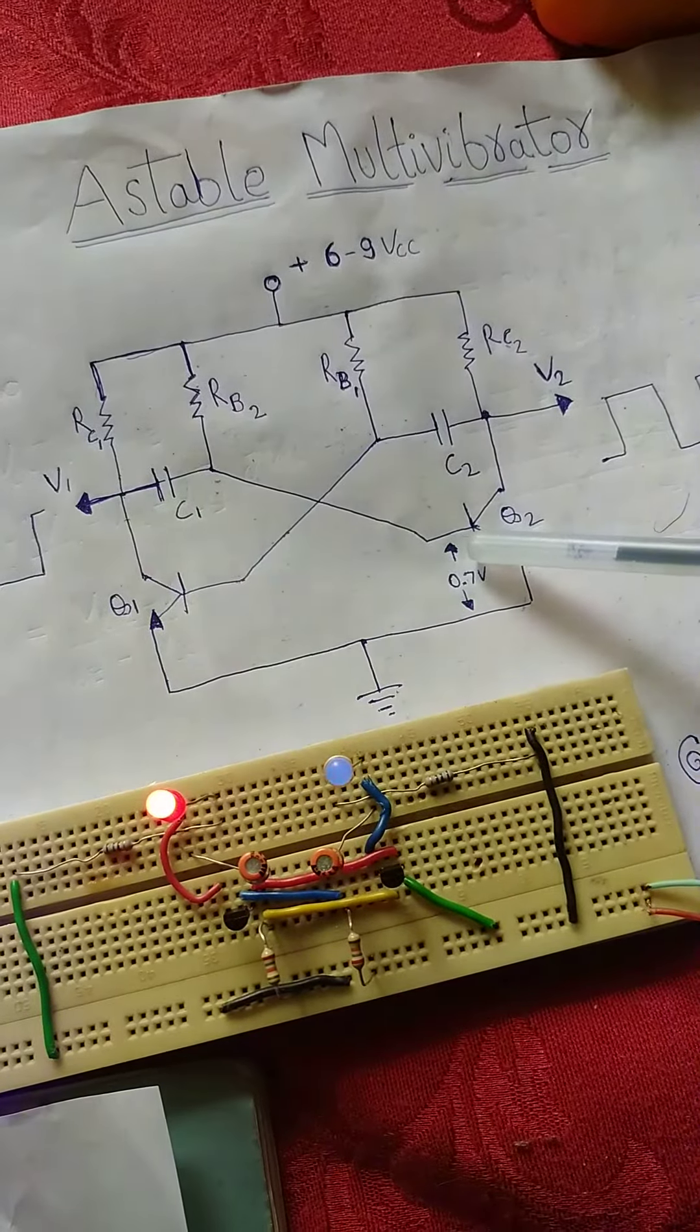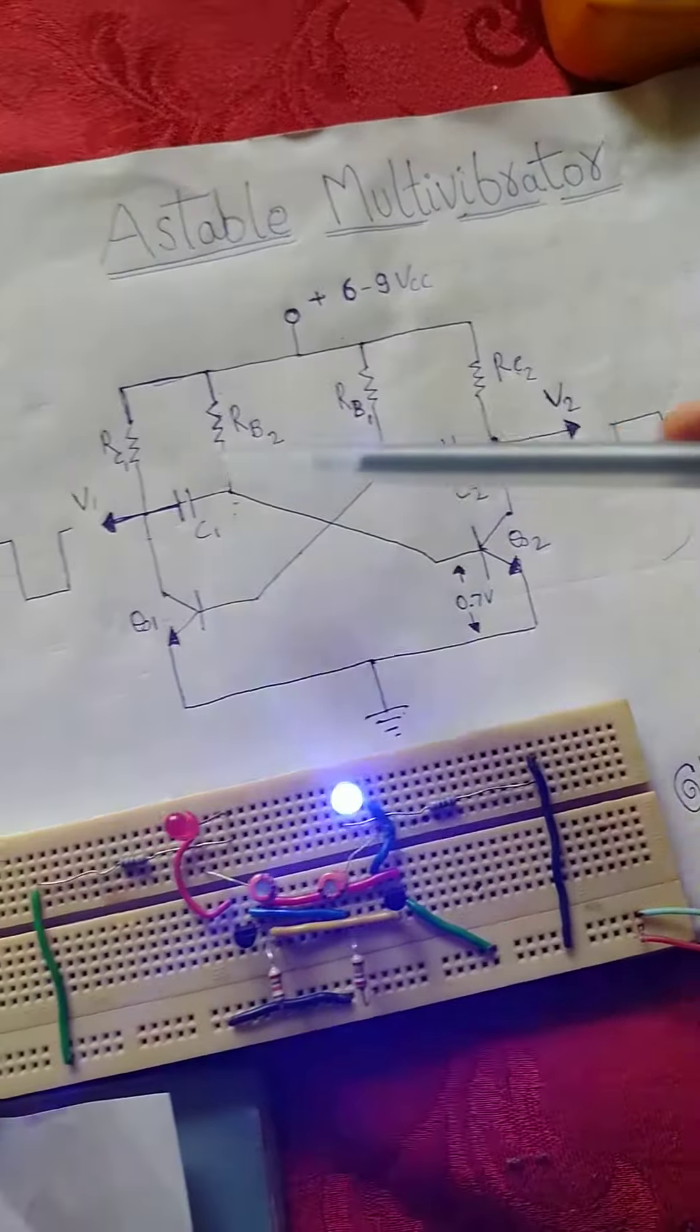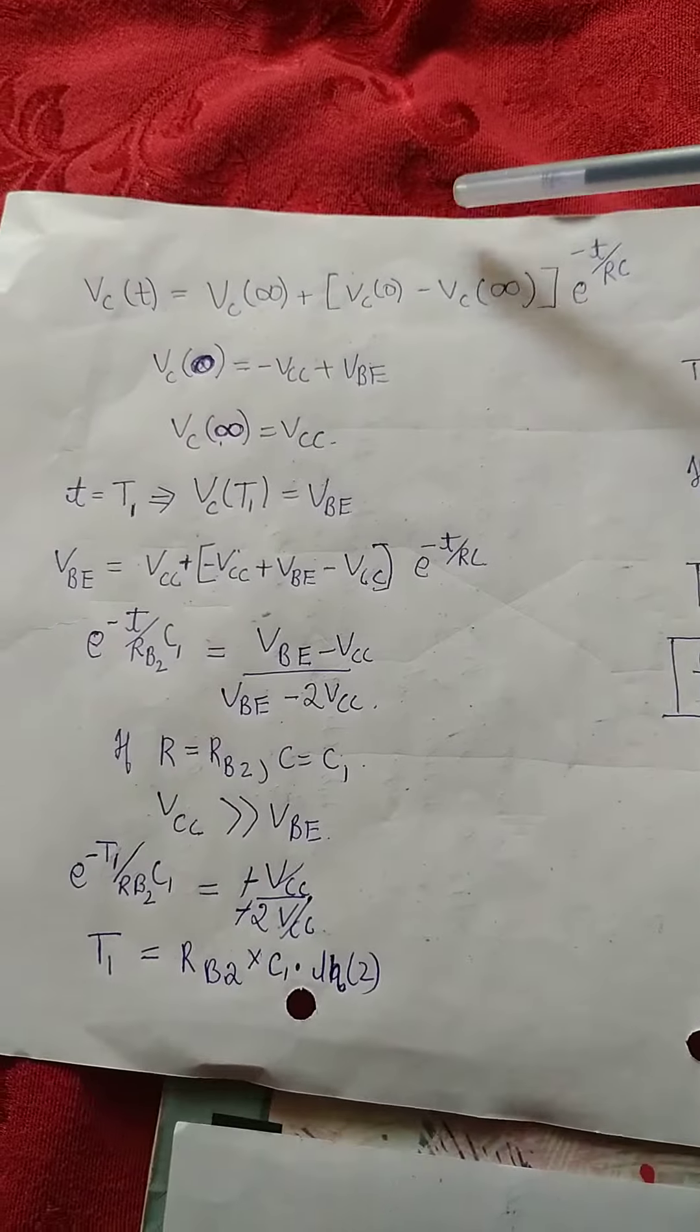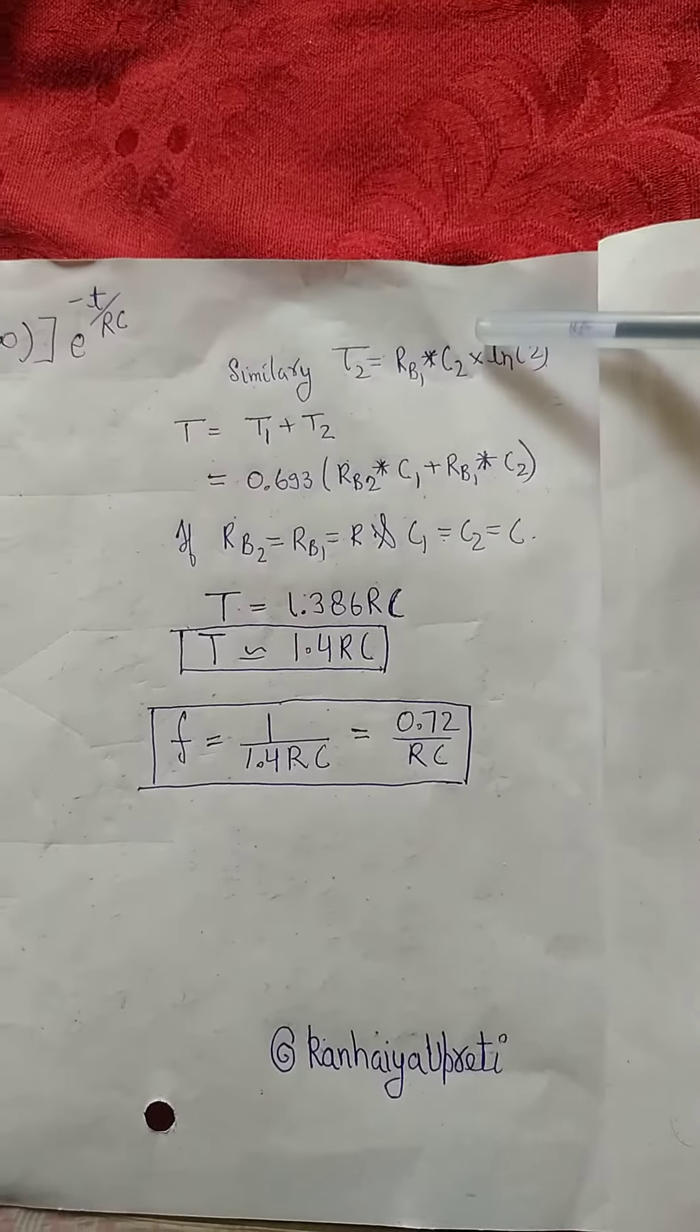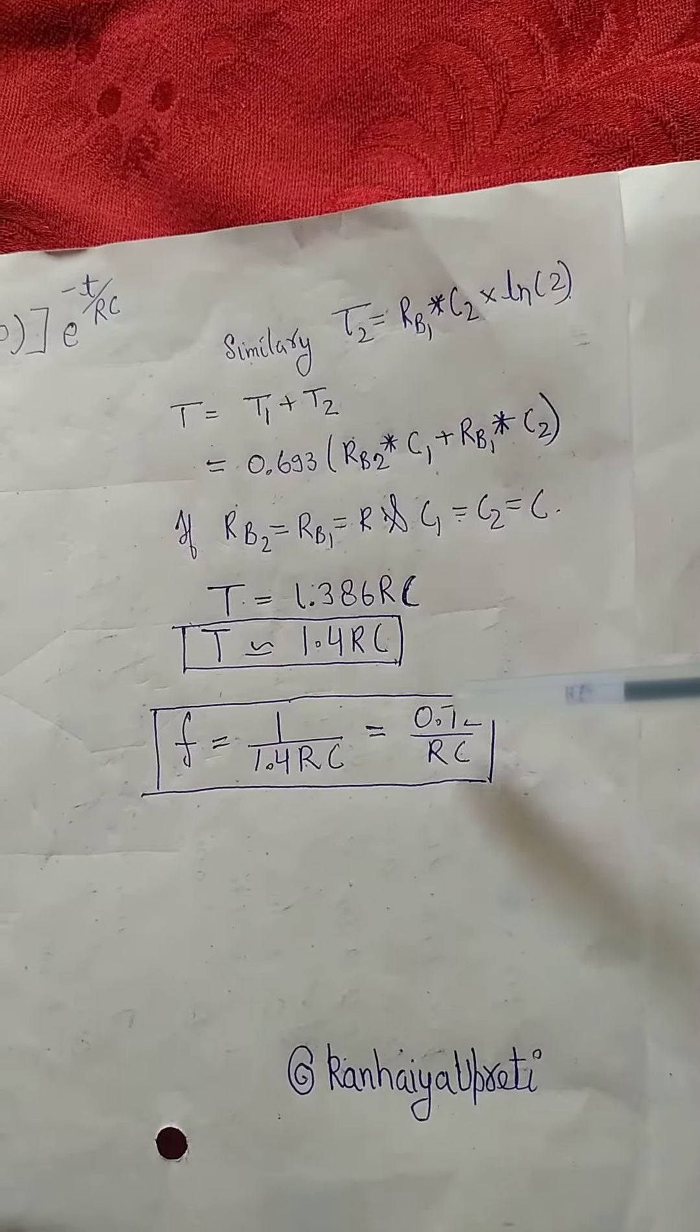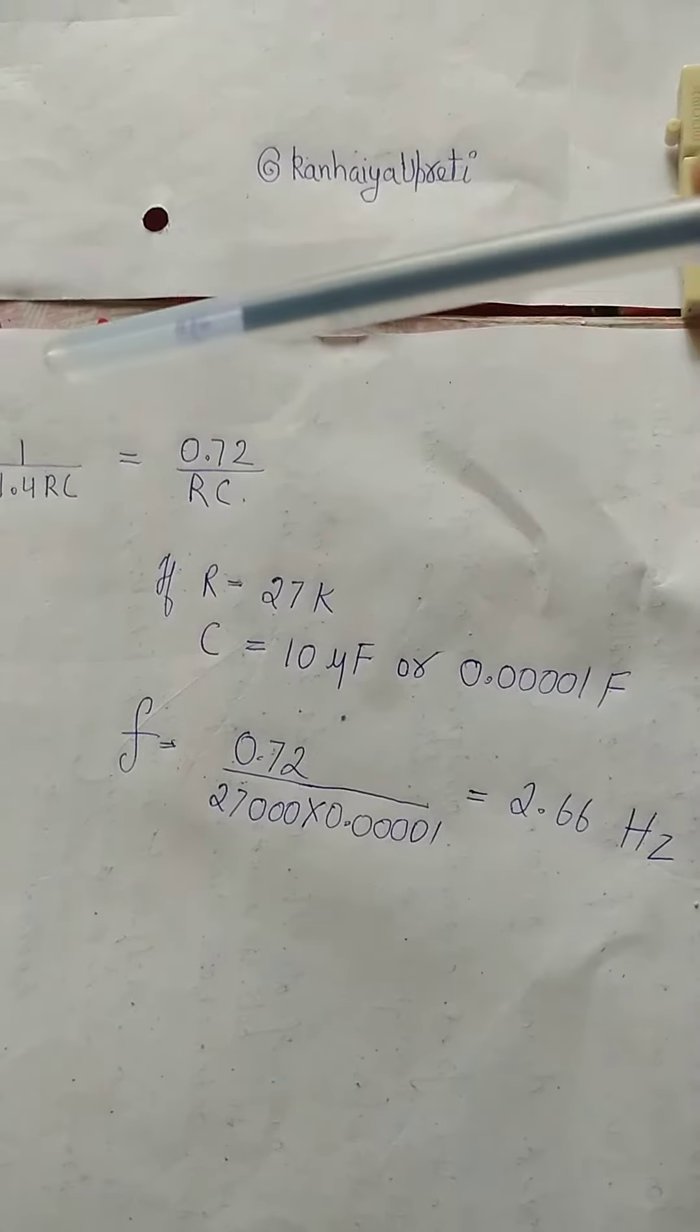This gives us square wave at these two points. Now the frequency of the square wave can be calculated using transient analysis, which I have figured out to be 0.72 upon RC.